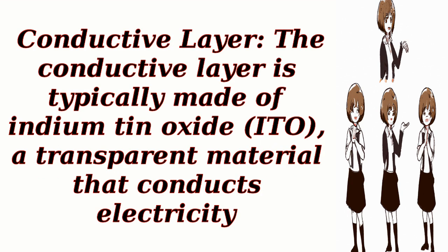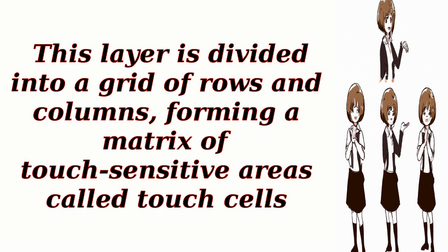Conductive layer: the conductive layer is typically made of indium-tin oxide (ITO), a transparent material that conducts electricity. This layer is divided into a grid of rows and columns, forming a matrix of touch-sensitive areas called touch cells.